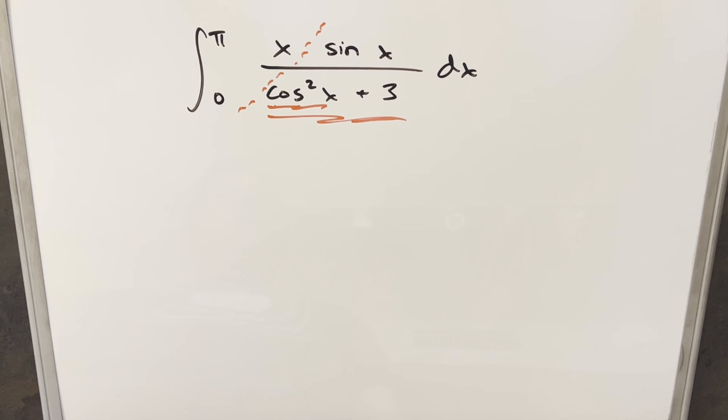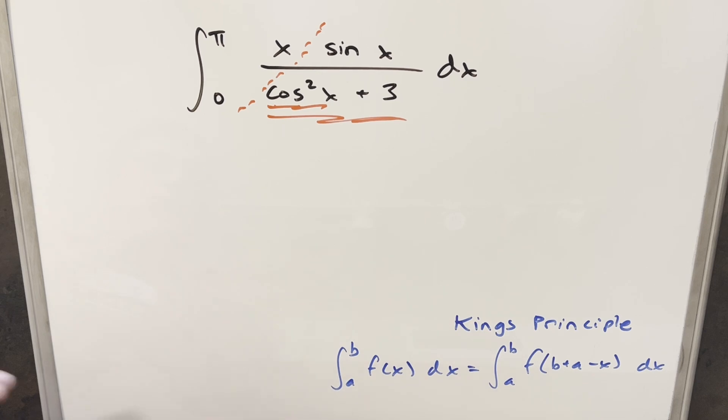So integration by parts seems like it could work, but I didn't really go down that road. What I wanted to do instead was use King's Principle on this. So now going ahead with King's Principle, we'll just use our formula that we have over here. This gives us a shortcut on the u-substitution.